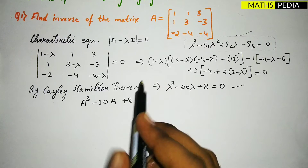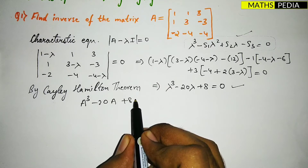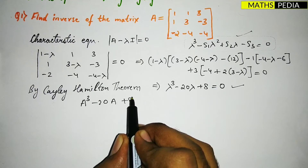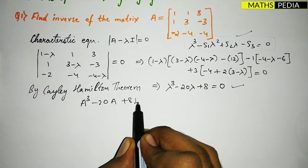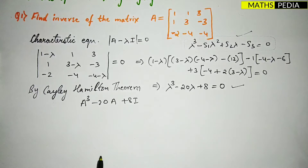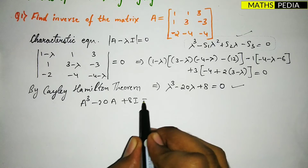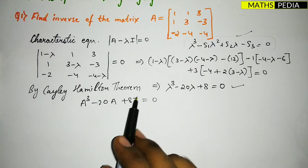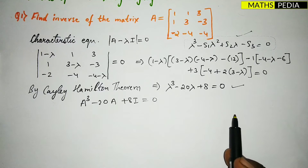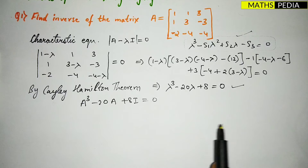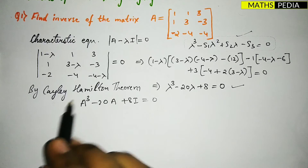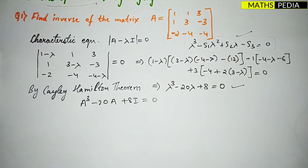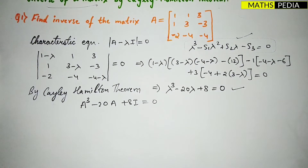So by the Cayley-Hamilton theorem, we write: A³ - 20A + 8I = 0. Here 8 is a constant, so it becomes 8I to maintain the same matrix order (3×3). Our intention is to find the inverse, so we proceed from this equation.